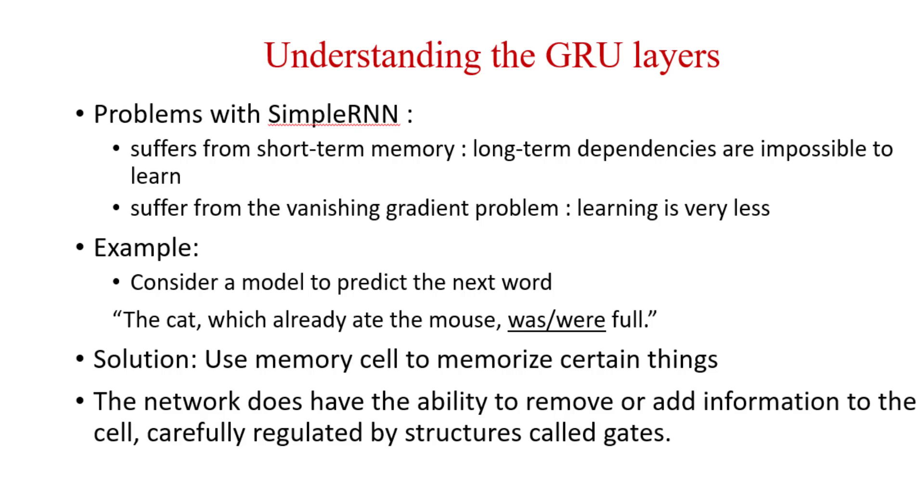Second problem is it suffers from vanishing gradient descent. So if we are adding more and more simple RNNs in the neural network, then at some point that neural network will not be learnable. Learning will be very less due to the vanishing gradient problem.